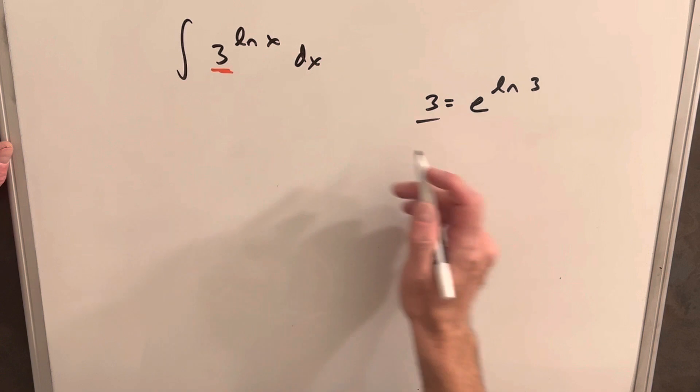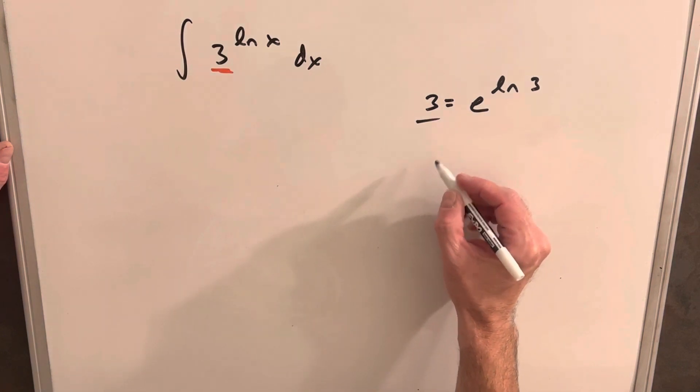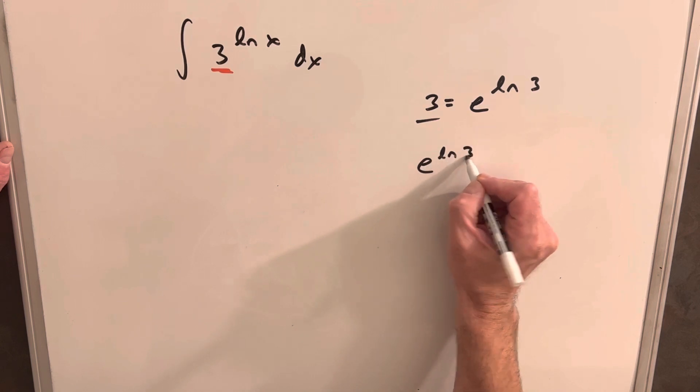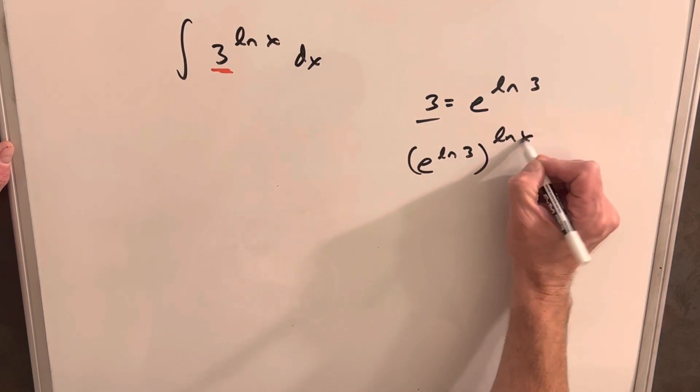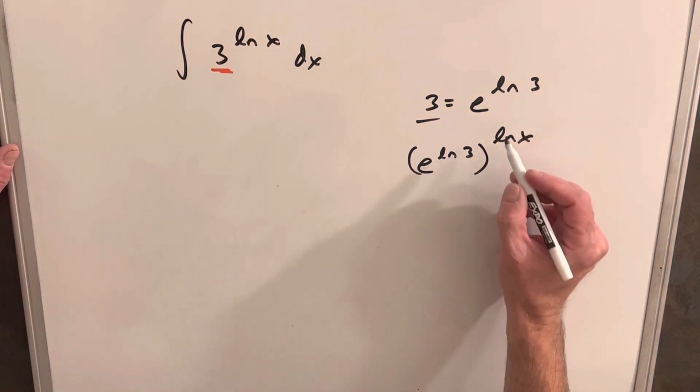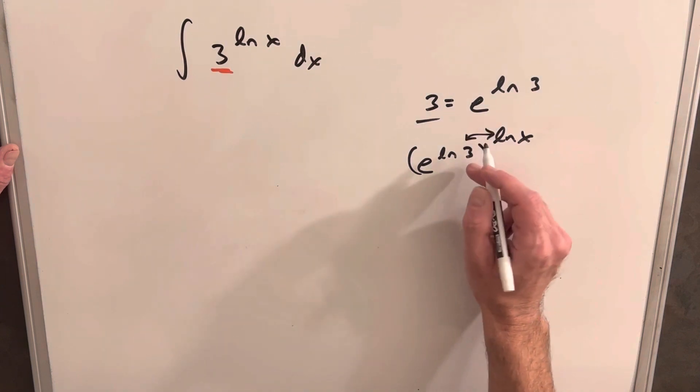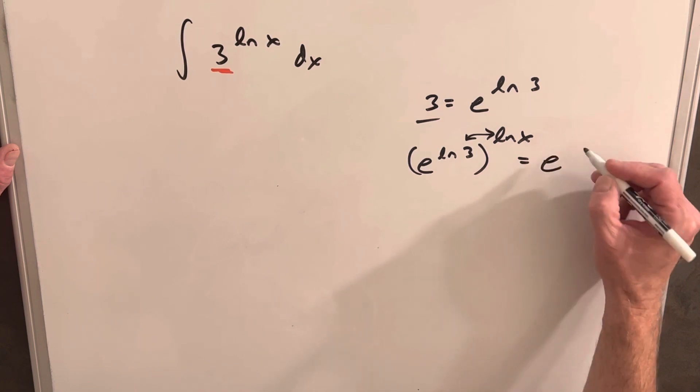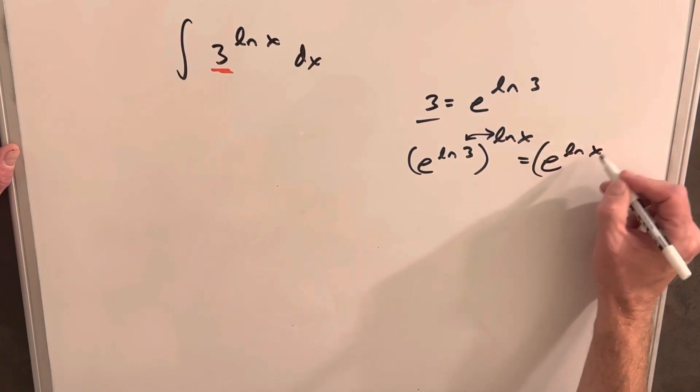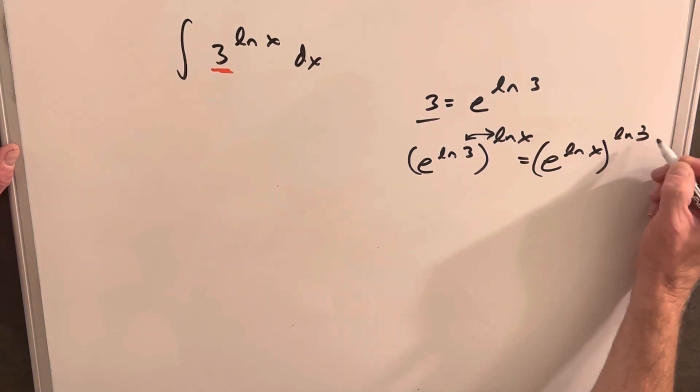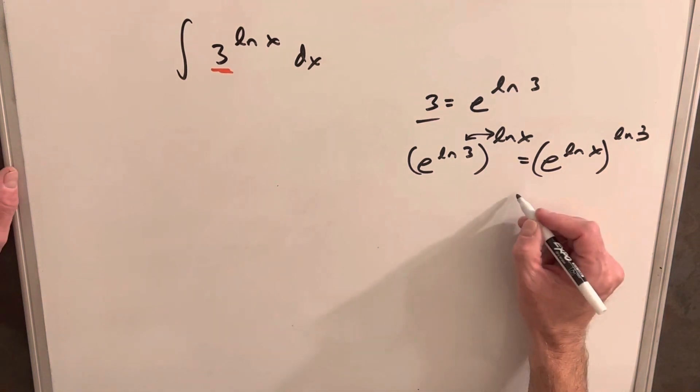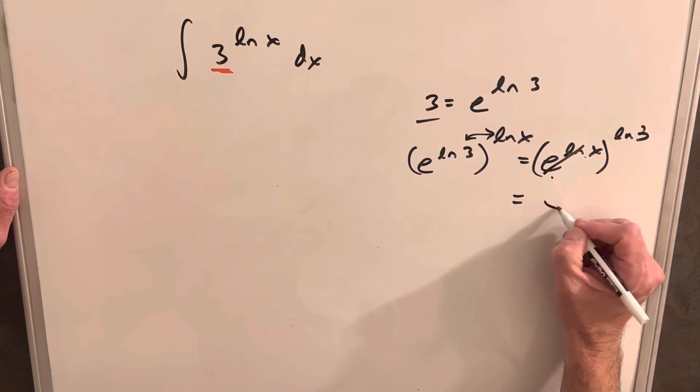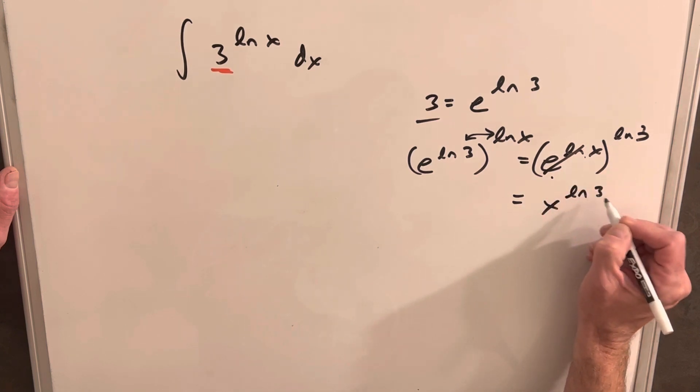Then going back to our expression, let's, again, on the side, let's manipulate this. So we can rewrite our 3 as e to the ln 3, and then we have our ln x. But then what we can do is we can just swap these. We can multiply the ln x in and take the ln 3 out. So we can write this as e to the ln x times ln 3. But then this is the same thing. e to ln x is just x when those cancel. So this is the same thing as x to the ln 3.